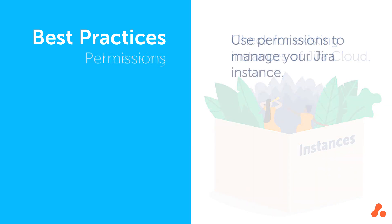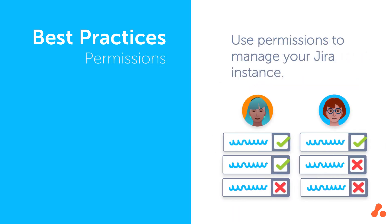And speaking of permissions, Jira Cloud includes project templates that allow you to set a simple restriction level for project access. This restriction level allows you to choose which users and groups have access at any time. Those with Jira administrator access can also set some global permissions. For example, by default every user in an instance can create new next-gen projects, but a Jira admin can turn this feature off if needed.